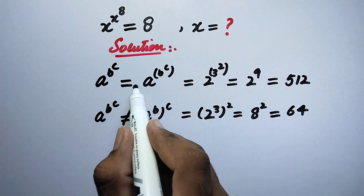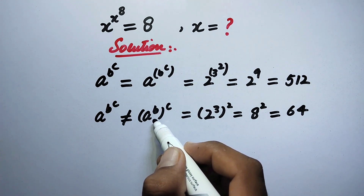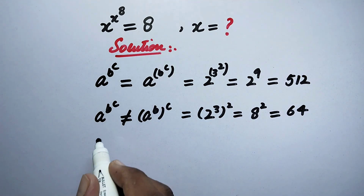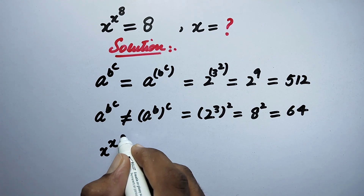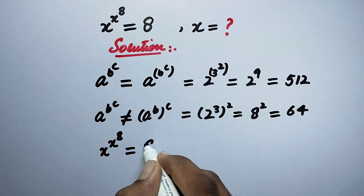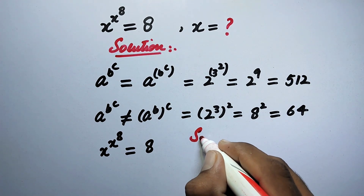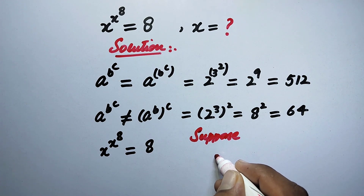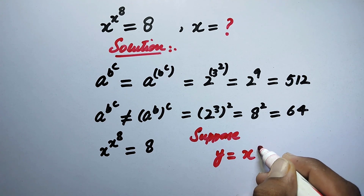This proves that the solving order of these powers matters — the right way is to evaluate from top to bottom (right to left). So, applying this to our problem: x to the power of x to the power of 8 is equal to 8. To simplify, we let y equal x to the power of 8.